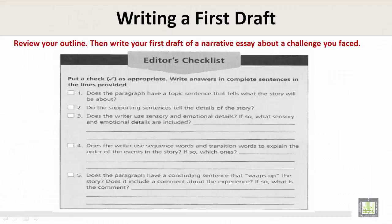Writing a First Draft. Review your outline, then write your first draft of a narrative essay about a challenge you face. Let's take a look at the Editor's Checklist. Put a check as appropriate and write answers in complete sentences in the lines provided. 1. Does the paragraph have a topic sentence that tells what the story will be about? 2. Do the supporting sentences tell the details of the story? 3. Does the writer use sensory and emotional details? If so, what sensory and emotional details are included?